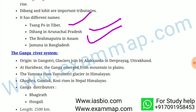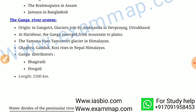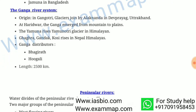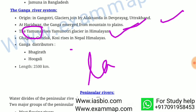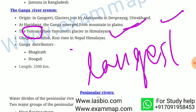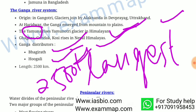The Ganga river system has its origin in Gangotri glacier, joined by Alaknanda at Devprayag, Uttarakhand. At Haridwar, Ganga emerges from the mountains to the plains. Yamuna rises from Yamunotri glacier in the Himalayas and is the longest tributary of Ganga. Ghaghra, Gandak, and Koshi rise in the Nepal Himalayas. Ganga's distributaries are Bhagirathi and Hugli, and the river has a length of 2,500 kilometers.